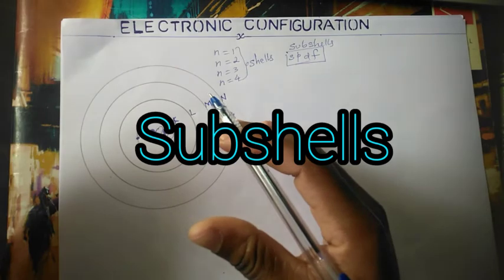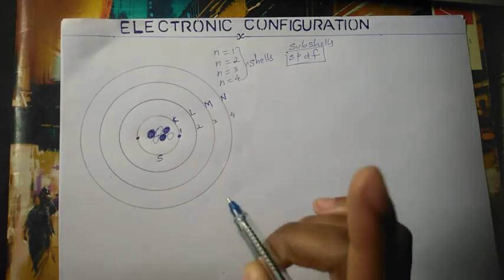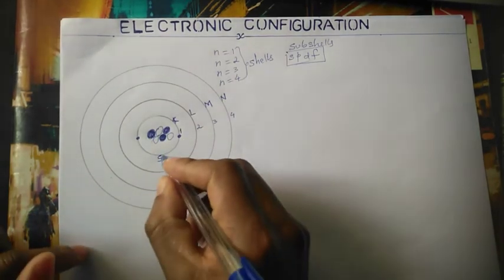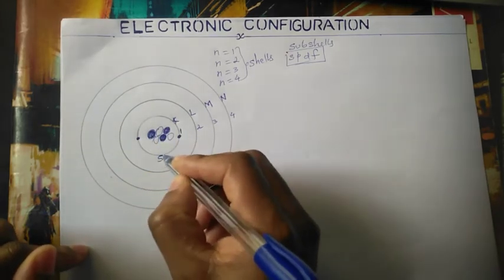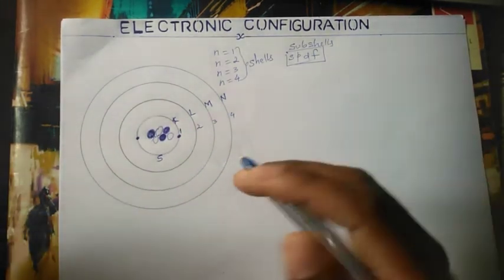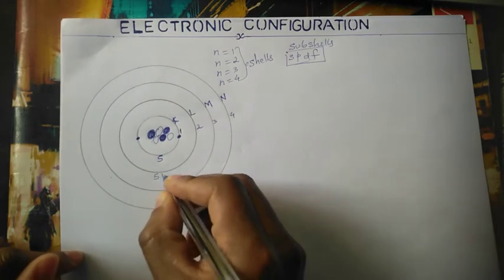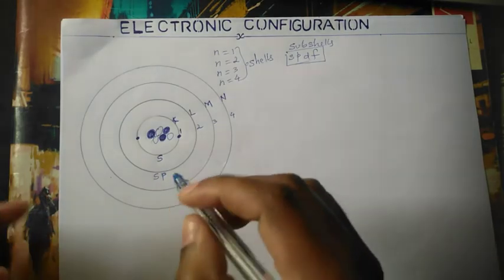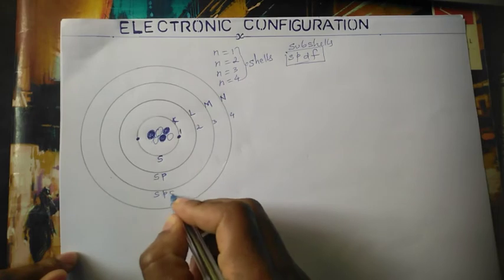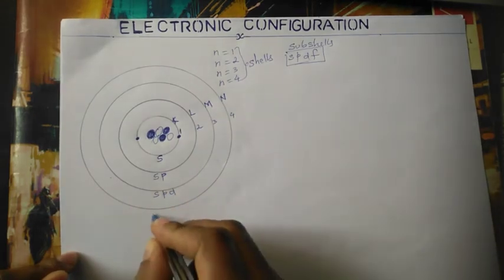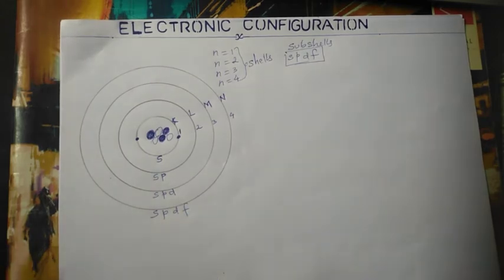For the first shell there is one subshell called s. The s subshell carries a maximum of two electrons. In the second shell there are two subshells: s and p. S carries two electrons and p carries six electrons. In the third shell it goes up to s, p, and d. The fourth shell has s, p, d, and f.